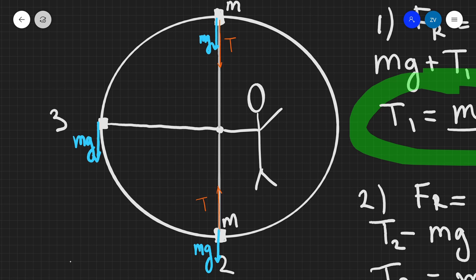Now our tension T will be acting towards the center, like so. In this case, there's going to be a 90 degree angle between the two forces, which means that they're going to be completely independent. So in this case, the tension will be equal to the centripetal force, which is mv squared divided by r.